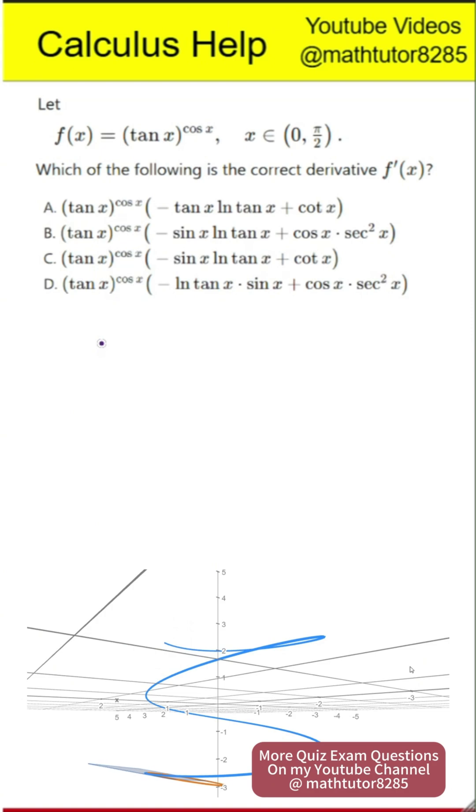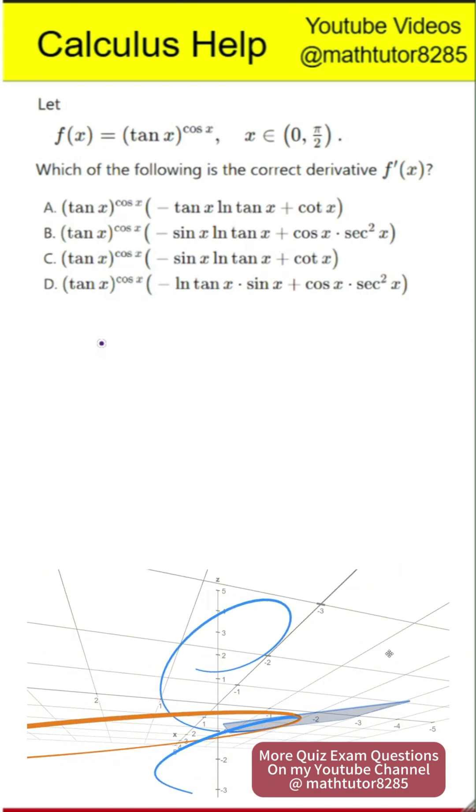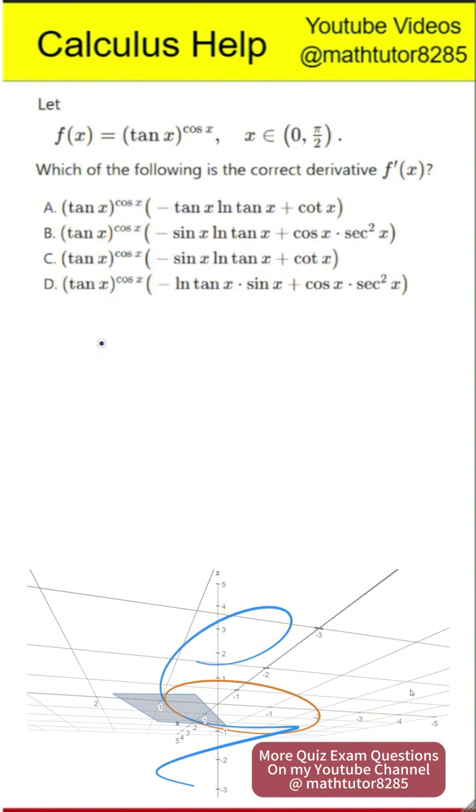Let f of x equal tangent x raised to the power cosine x, where x is between 0 and pi over 2. Which of the following is the correct derivative of f of x? There are four options.